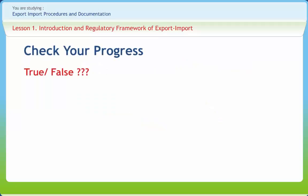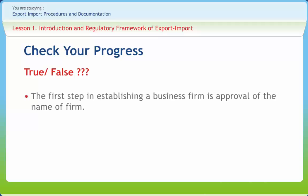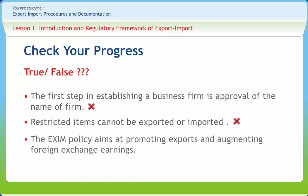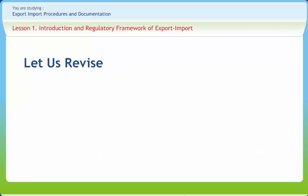Let us check our progress. The first step in establishing a business firm is approval of the name of the firm — Wrong. Restricted items cannot be exported or imported — Wrong. The Exim policy aims at promoting exports and augmenting foreign exchange earnings — Right.